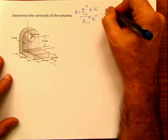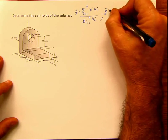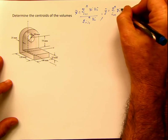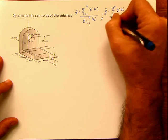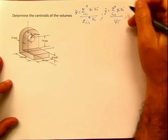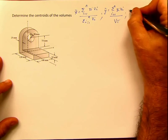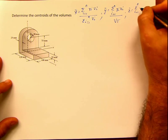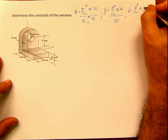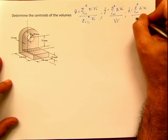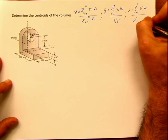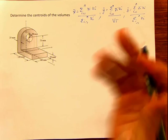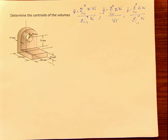The same thing applies for y-bar: summation from i=1 to n of y_i·v_i divided by the total volume. And the same for z-bar: summation from i=1 to n of z_i·v_i divided by the summation from i=1 to n of v_i, which is the total volume.